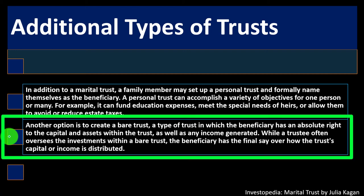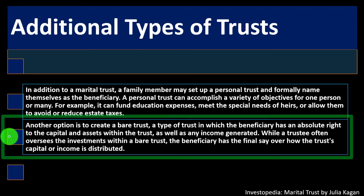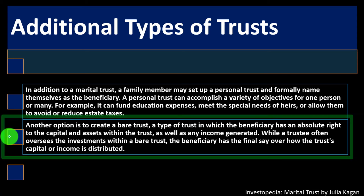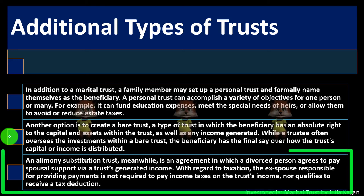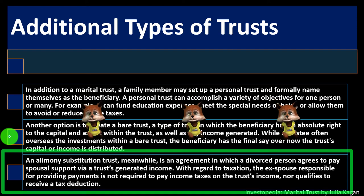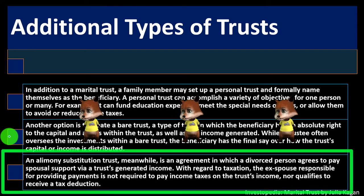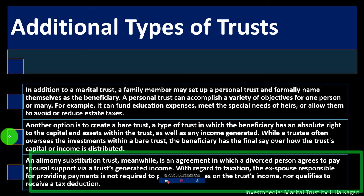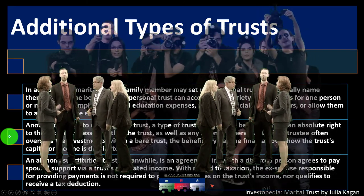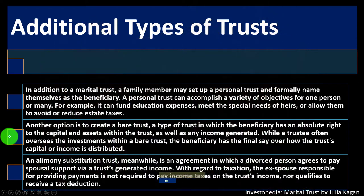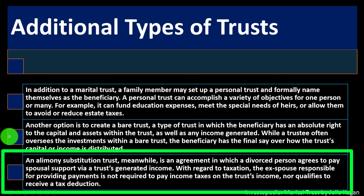Another option is to create a bare trust — a type of trust in which the beneficiary has an absolute right to the capital and assets within the trust as well as any income generated. While a trustee often oversees investments within a bare trust, the beneficiary has the final say over how capital or income is distributed. An alimony substitution trust is an agreement in which a divorced person agrees to pay spousal support via a trust's generated income. The ex-spouse providing payments is not required to pay income taxes on the trust's income. Be aware of recent changes to tax laws regarding alimony payments and recipients.